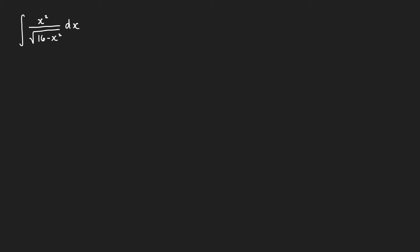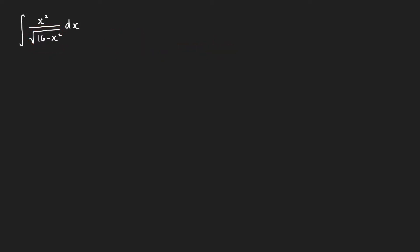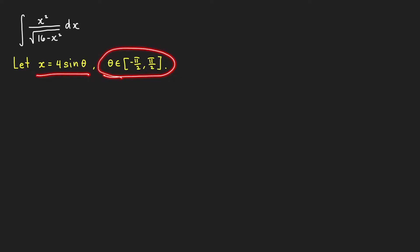First, let us evaluate the integral of x squared over square root of 16 minus x squared dx. Because this radical has the form square root of a squared minus x squared, we can use the substitution x equal to a sine of theta. Therefore, we let x equal to 4 sine theta, where theta is in this closed interval.